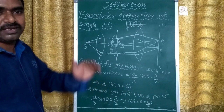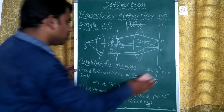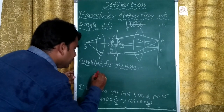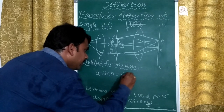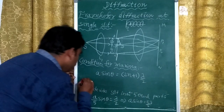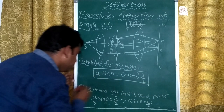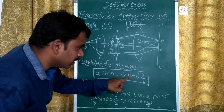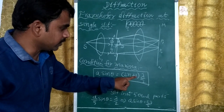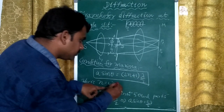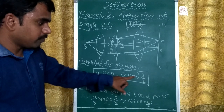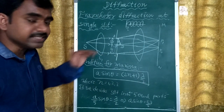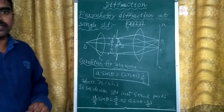The general condition for maxima is a·sin θ = (2n+1)·λ/2, where n = 1, 2, 3, and so on. For n=1: (2·1+1)·λ/2 = 3λ/2. For n=2: (2·2+1)·λ/2 = 5λ/2. This is the concept of Fraunhofer diffraction at a single slit.